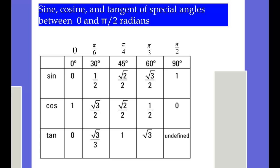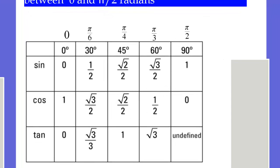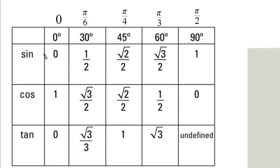Putting it all together, here are the sine, cosine, and tangent values for 0, pi over 6, pi over 4, pi over 3, and pi over 2. We'll look at the patterns these make, which will lead to our definitions of sine, cosine, and tangent as functions. It will be very helpful to commit all these values in this table to memory.